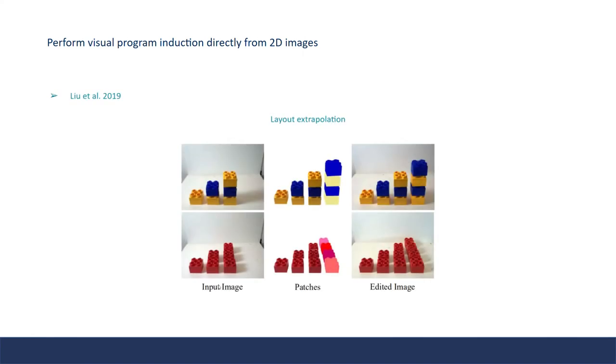Some other work try to perform visual program induction directly from 2D images. Some work can infer programs that generate 2D diagrams directly from hand-drawn sketches, and the inferred program can be used in downstream tasks like image editing as shown here. Visual program induction allows efficient and flexible scene manipulation.